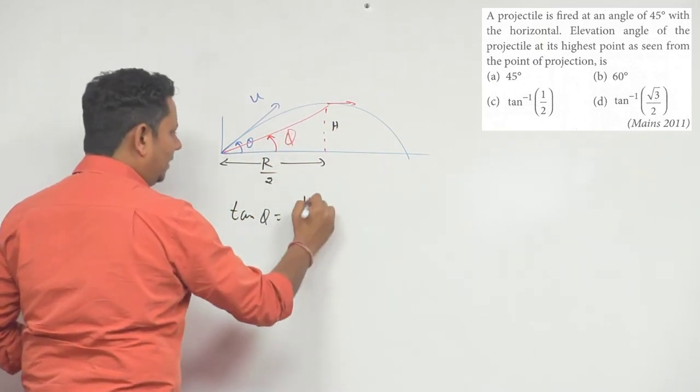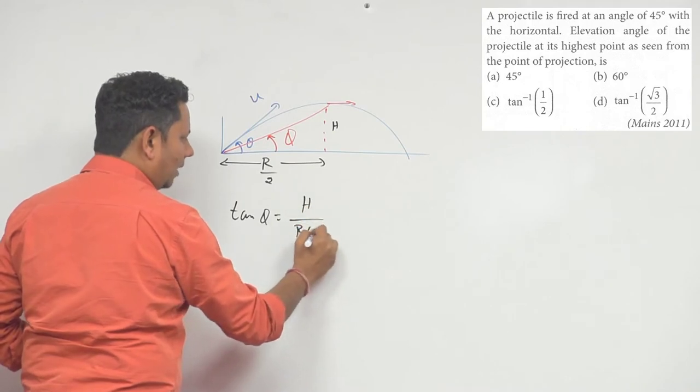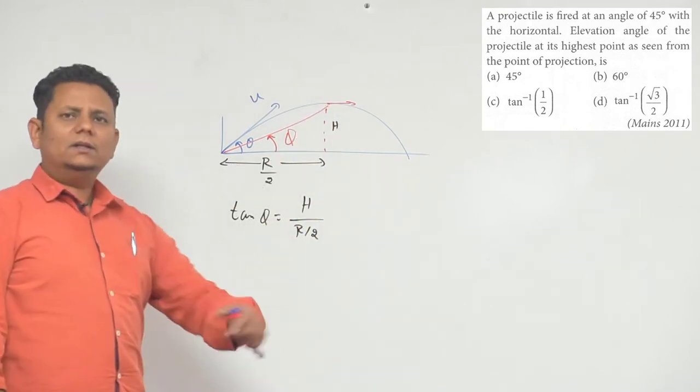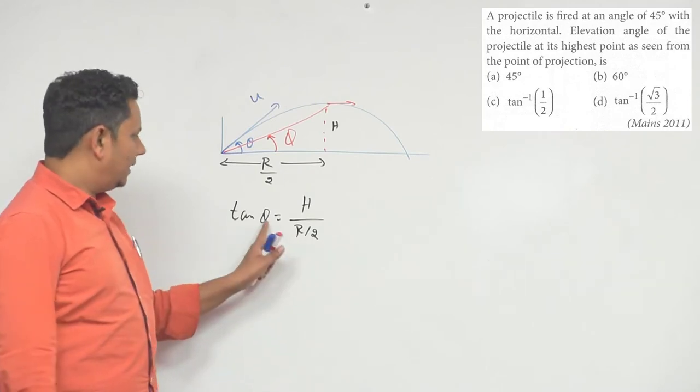So we can write tan phi equals h divided by R/2.